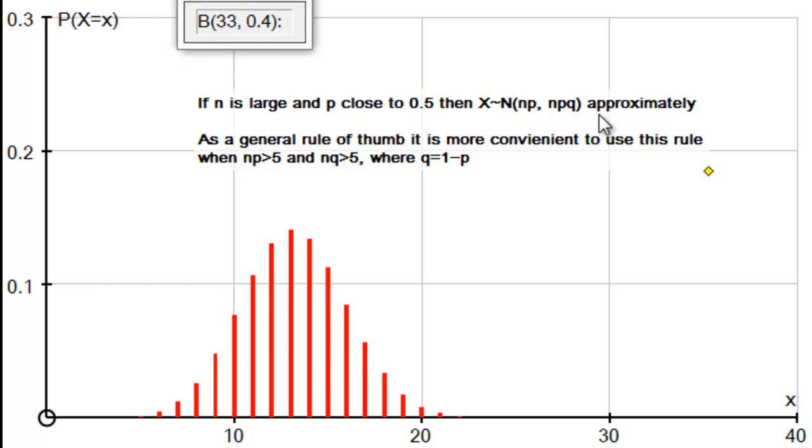Now this is fairly vague. How large is large and how close do we have to be to 0.5 for this approximation to work? Well, as a general rule of thumb, it is more convenient to use this rule. That is that when np is greater than 5 and nq is greater than 5, remember q is 1 minus p, then we can use this approximation. Now what I'd like to do now is do an example where I show you how we can use this approximation.